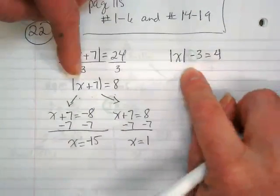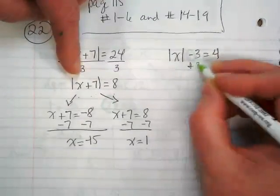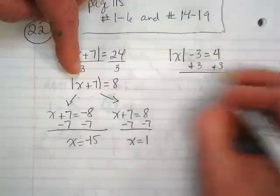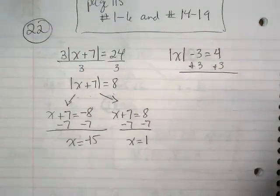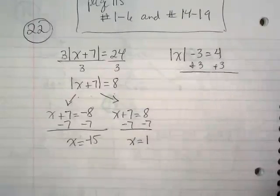For this one, what do you think the first step is? Plus 3. We can't do anything to do our two possibilities until we've gotten the absolute value by itself.